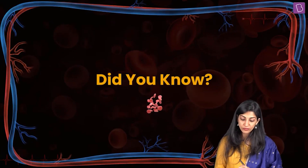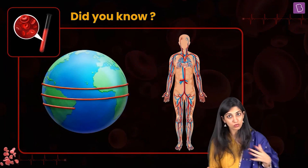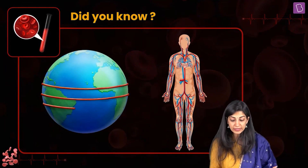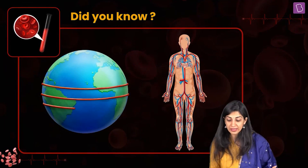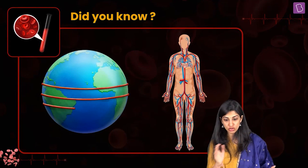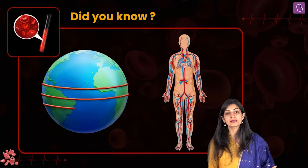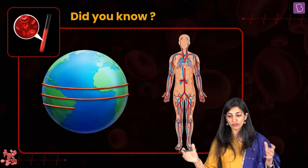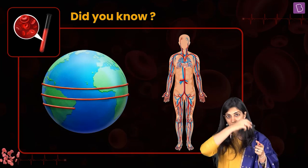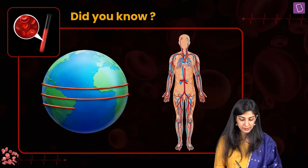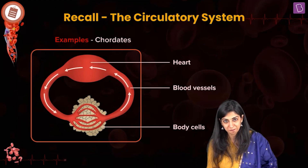One interesting fact: the total length of blood vessels in an average human adult is twice the earth's circumference. So if all the vessels were taken out of the body, they could surround the earth twice.